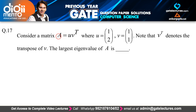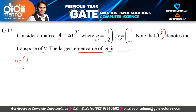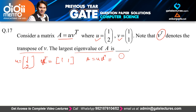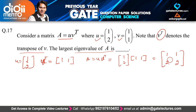Now question 17: Consider a matrix A = u·vᵀ. They give us u = [1, 2]ᵀ and v = [1, 1]ᵀ, where vᵀ denotes the transpose of v. They ask for the largest eigenvalue of A. Taking vᵀ as [1, 1] (a row vector), we write A = u·vᵀ = [1; 2]·[1, 1]. Multiplying these gives the matrix A = [[1, 1], [2, 2]].